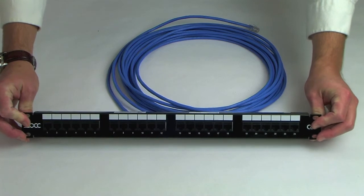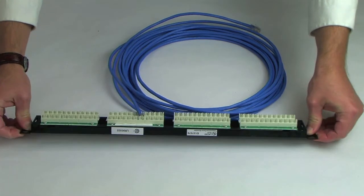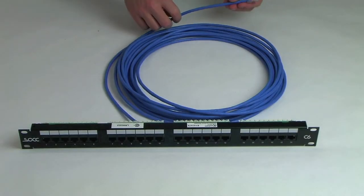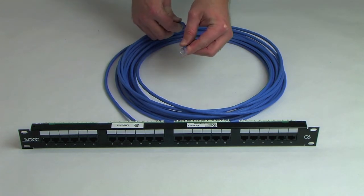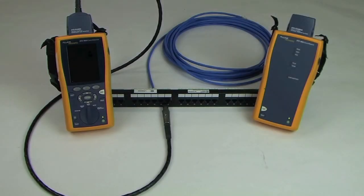Our modified permanent link configuration consists of 10 meters of Category 6 horizontal cable terminated with a patch panel at the near end and a poorly terminated modular plug at the far end. A Fluke DTX-1800 cable analyzer will be used to conduct the measurements.